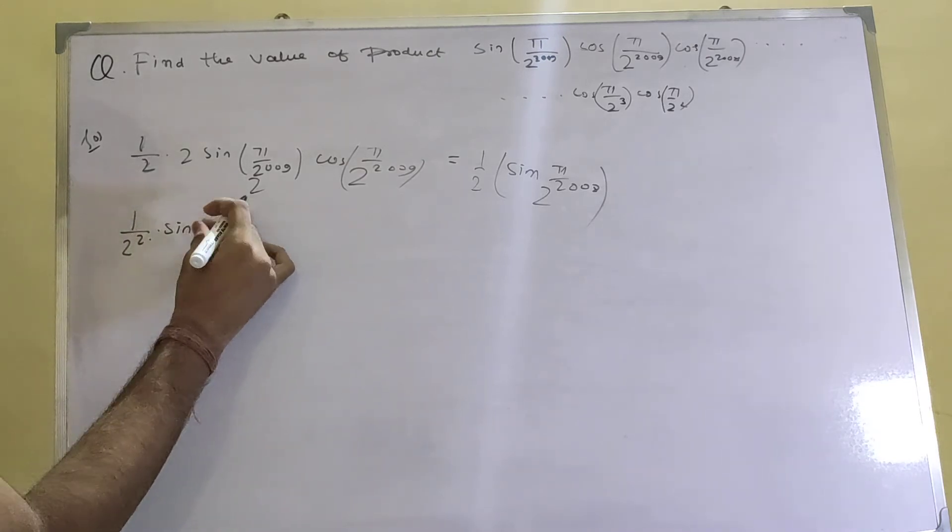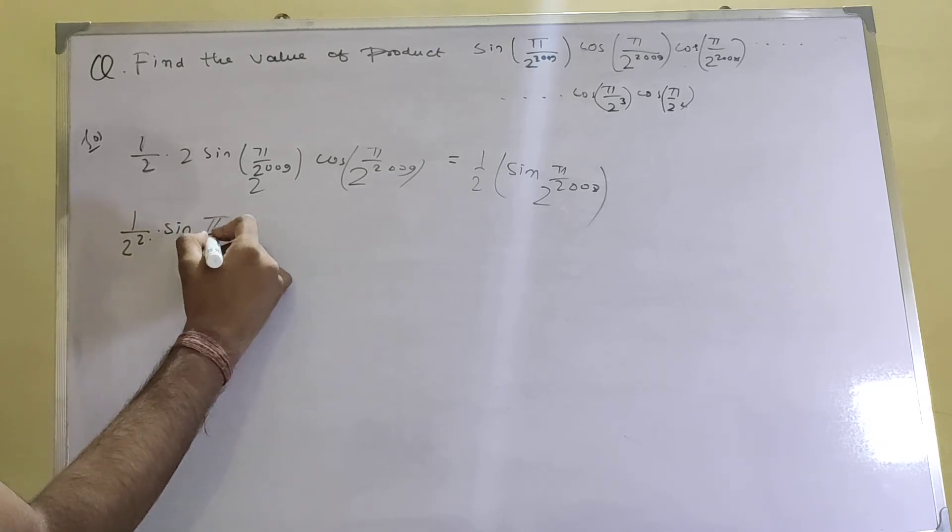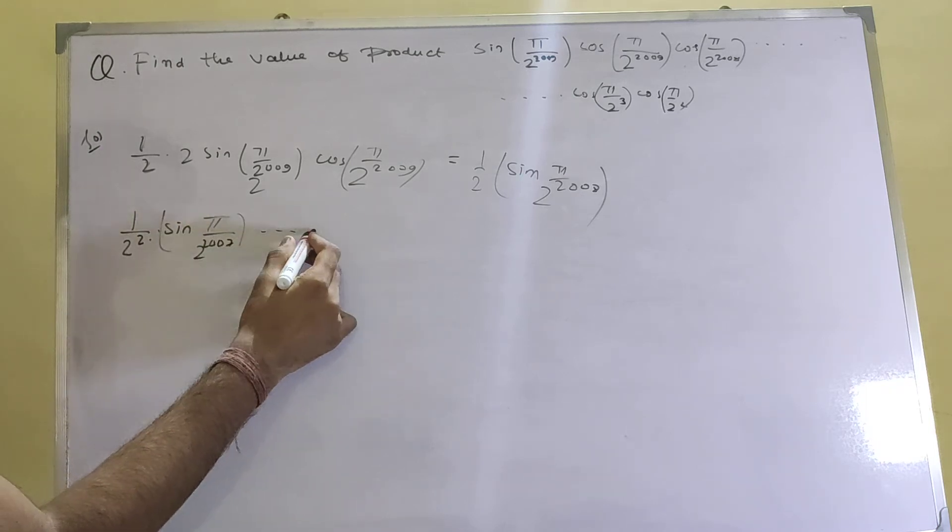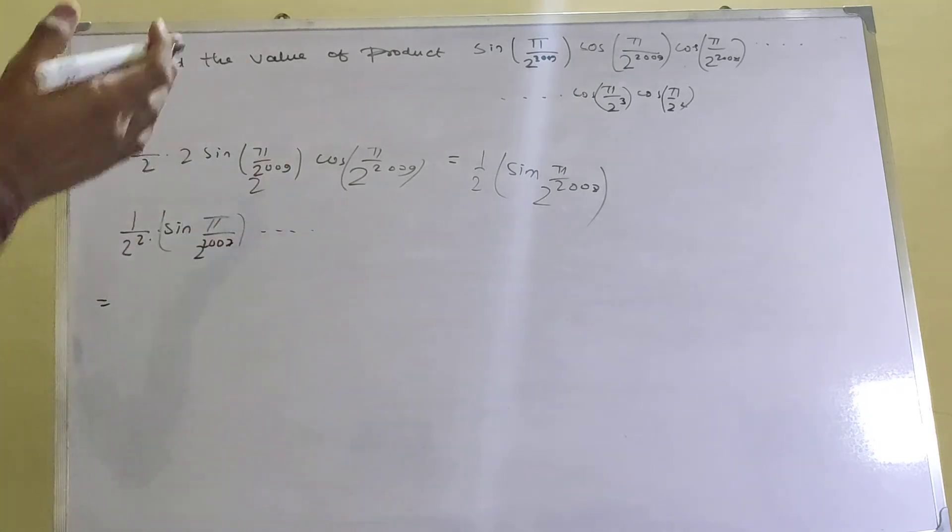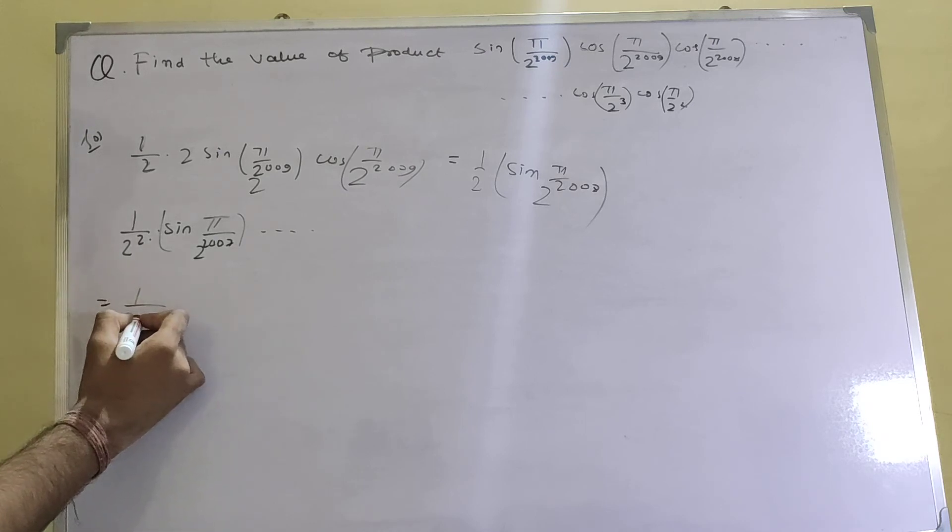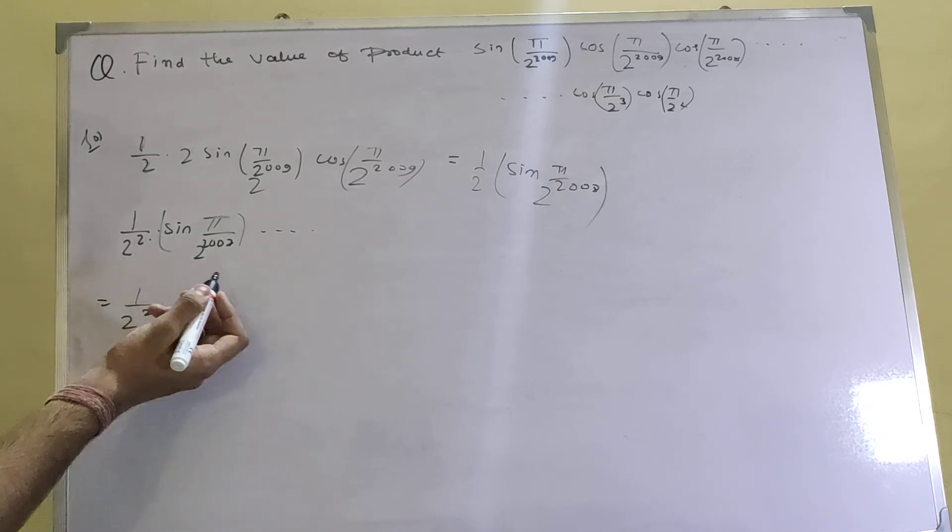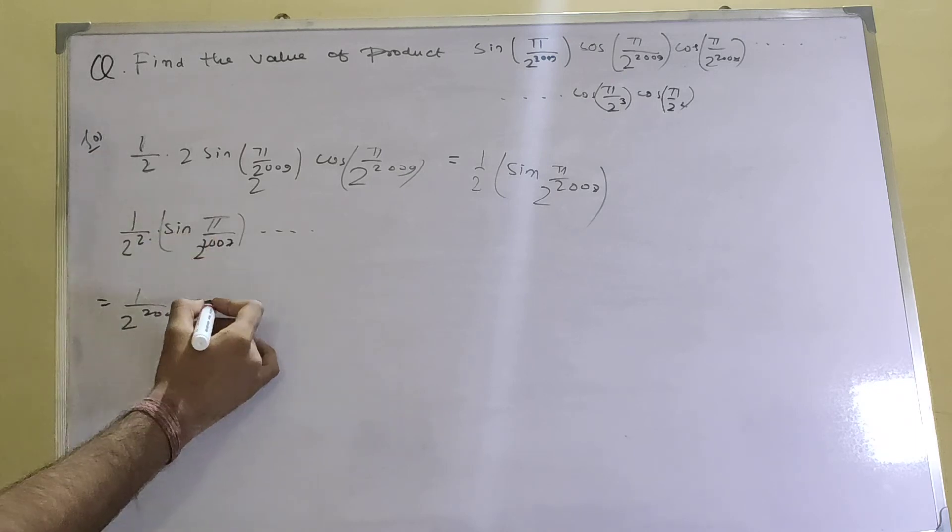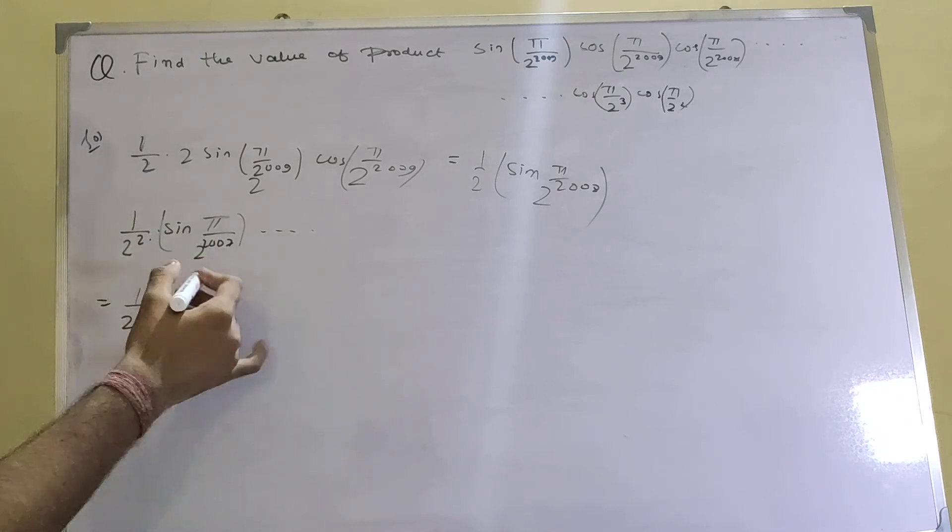And again, 2 into cos(π/2)² sin(π/2)². This will go on until cos(π/2)² with 2008 terms.